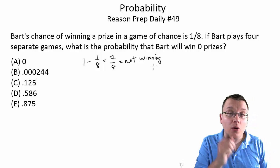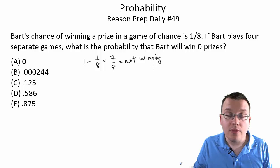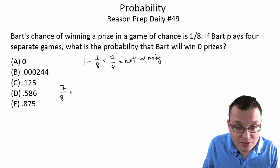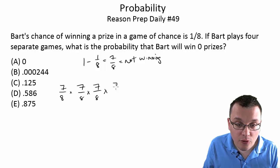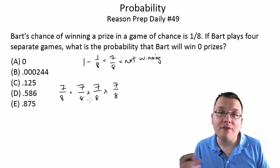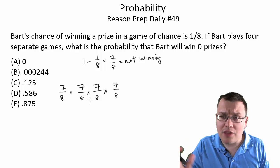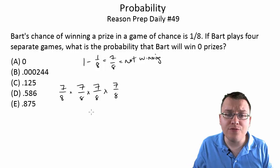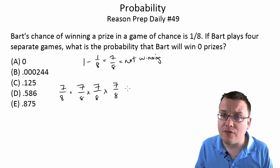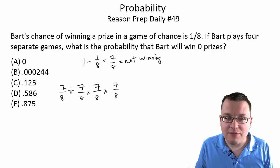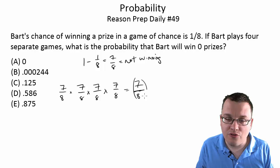If he's going to not win four games in a row, all we need to do in this case, since they're independent games, is just multiply seven eighths four times in a row. When you have independent events, when you have separate games as in this case, you just multiply the probabilities if you want to find the probability of a given sequence of events. So in this case, seven eighths times seven eighths times seven eighths times seven eighths is the same thing as seven eighths to the fourth.